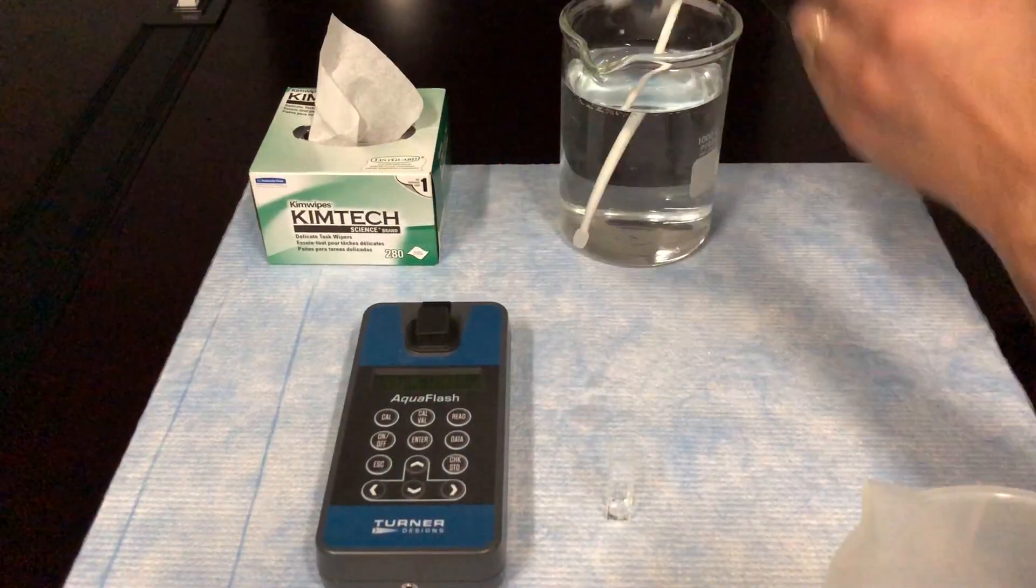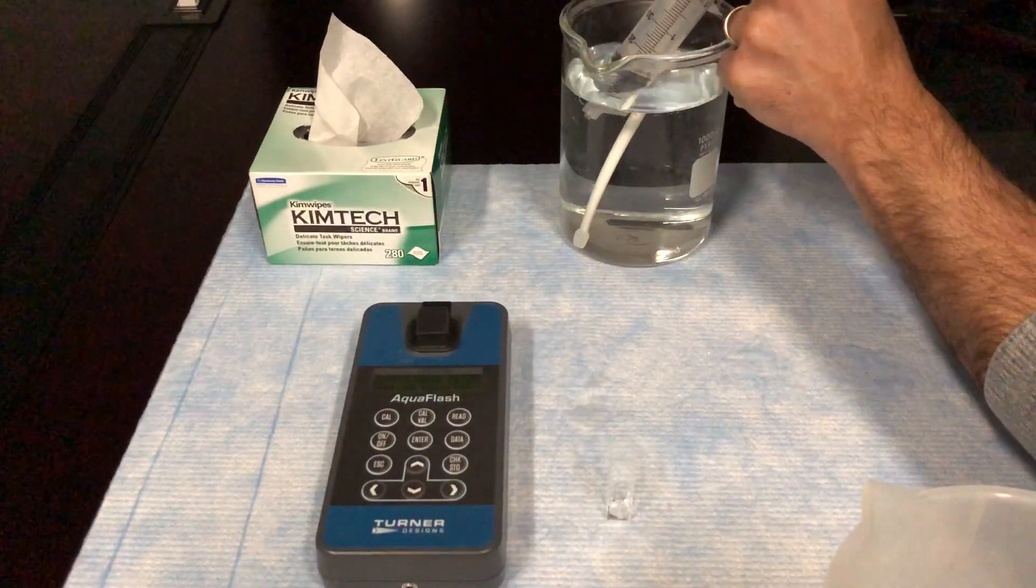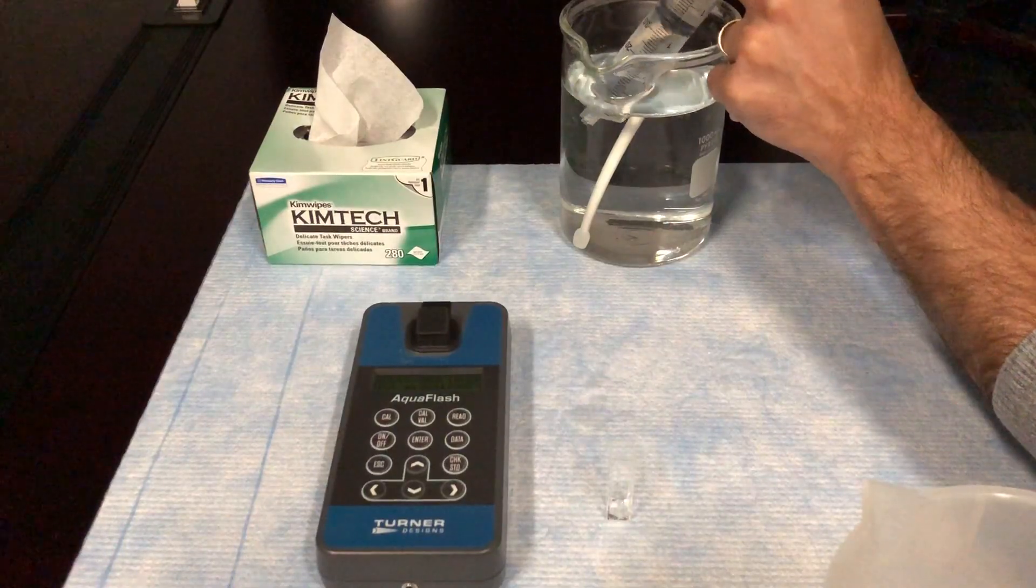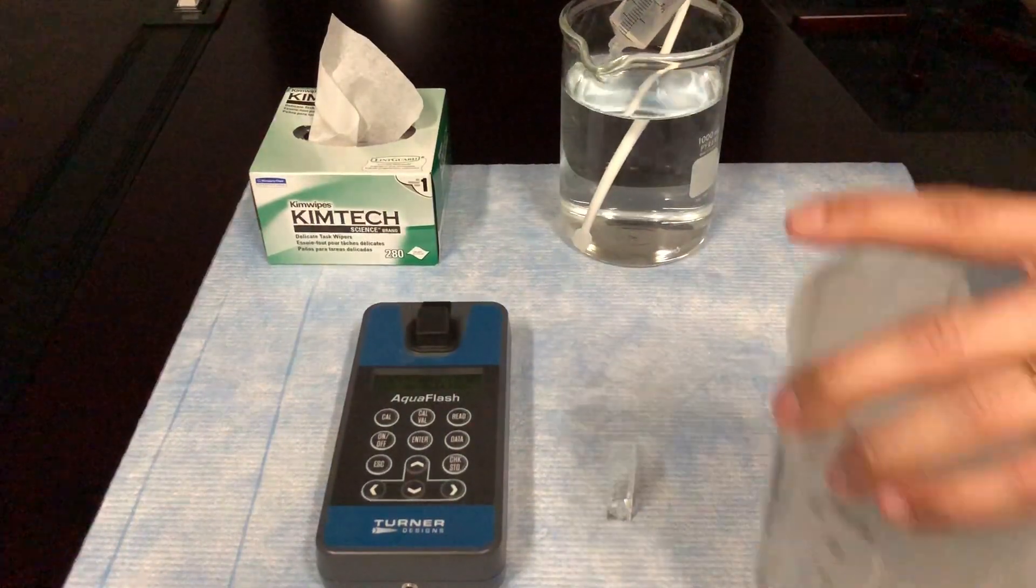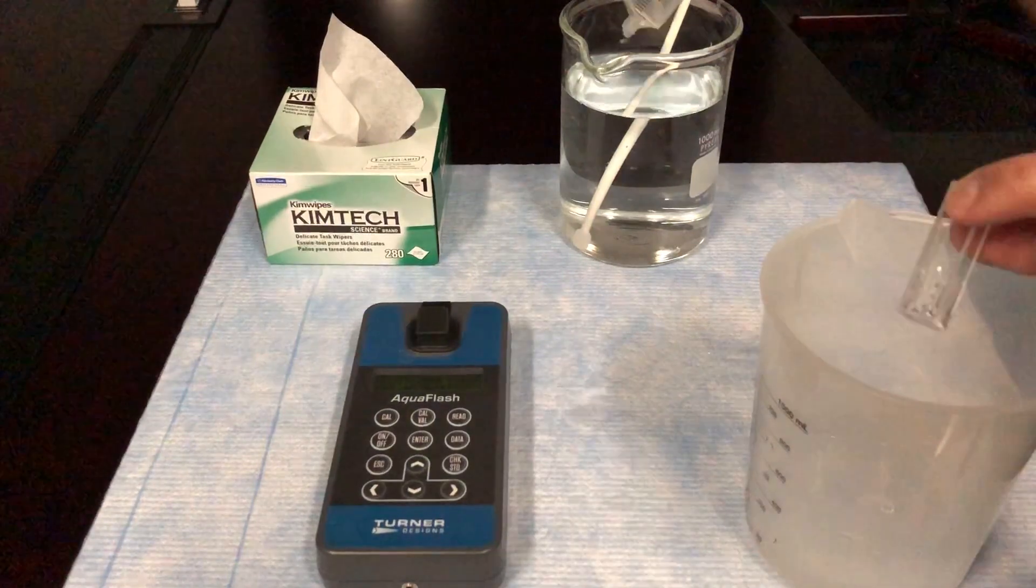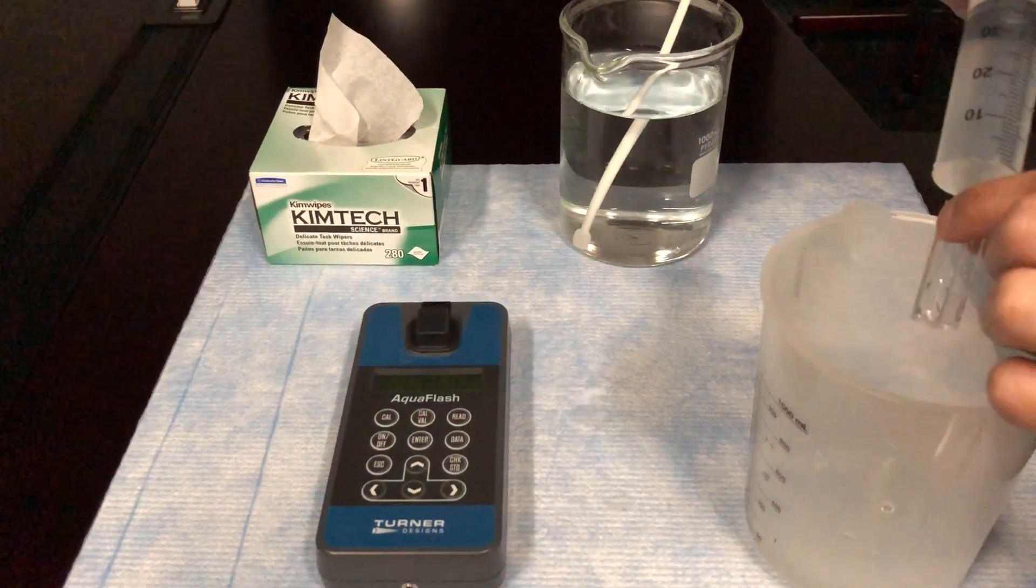Using your 60cc syringe, take up some source water and rinse your 10 by 10 millimeter glass cuvette three times using the water from your syringe.